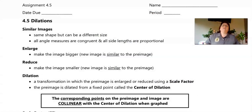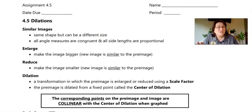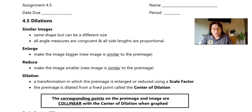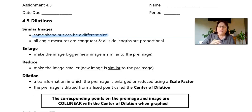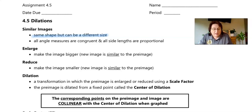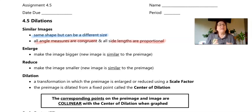Let's look at our vocabulary. First of all, dilations are similar images, meaning they are the same shape but a different size - either bigger or smaller. All angle measurements are going to be congruent, but the sides are going to be proportional, meaning we're going to use what's called a scale factor.